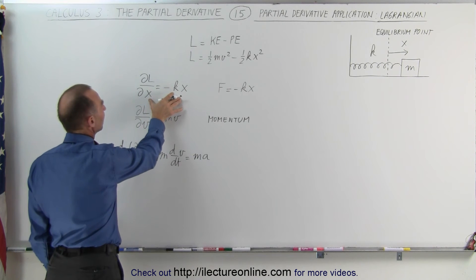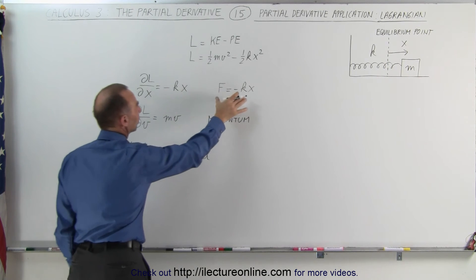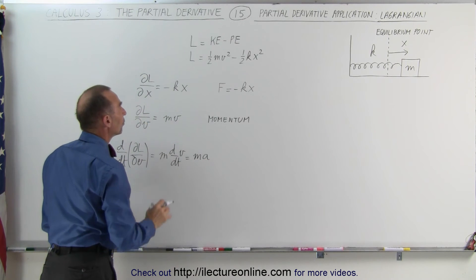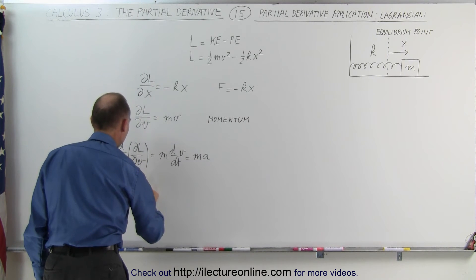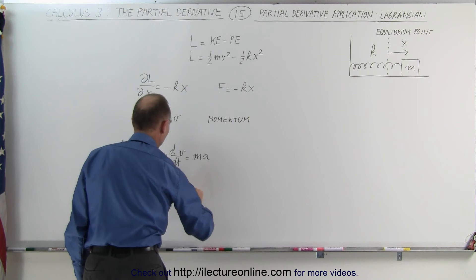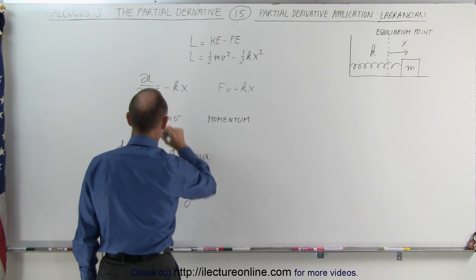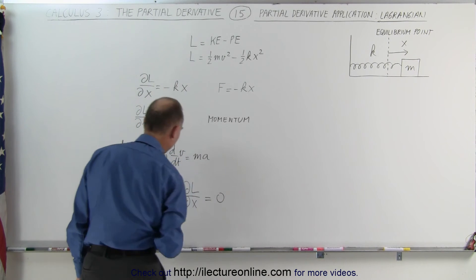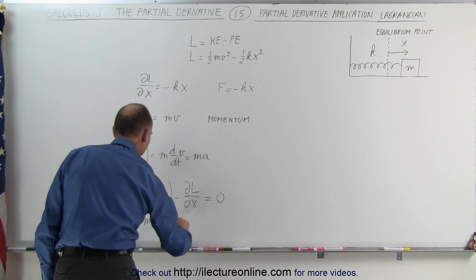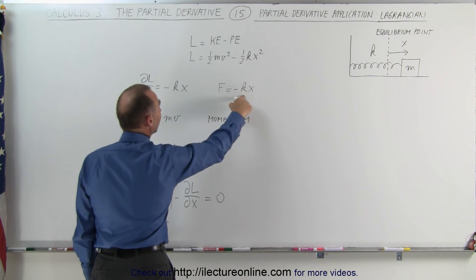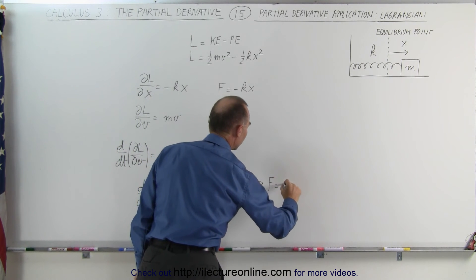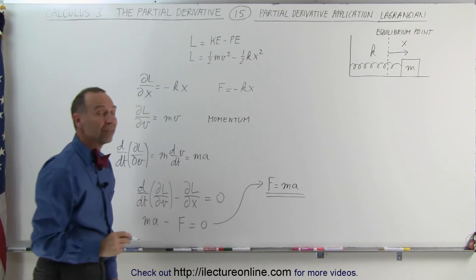Now you can see that the partial derivative of the Lagrangian with respect to x gives us the force, and taking the time derivative of the partial derivative of the Lagrangian with respect to velocity gives us ma. So if we subtract one from the other, we can say that d/dt of the partial of the Lagrangian with respect to velocity, minus the partial of the Lagrangian with respect to x, is equal to zero. Plugging in the numbers: m times a minus (minus kx), which equals force minus force, equals zero. Solving for the force, we get F equals ma — the equation describing Newton's second law.